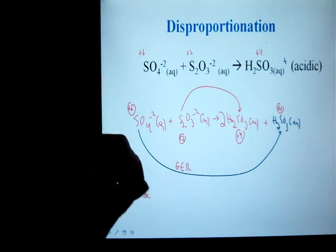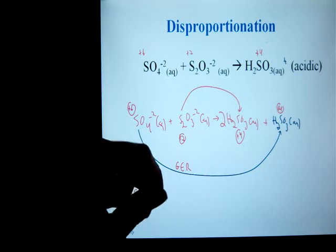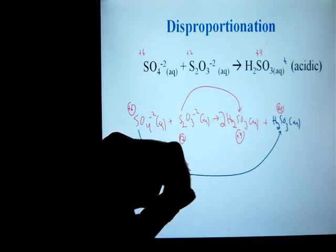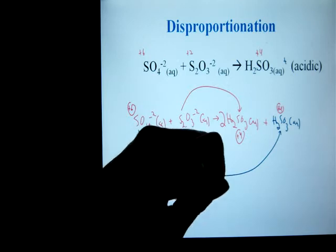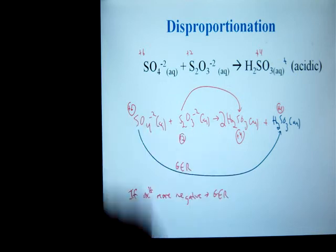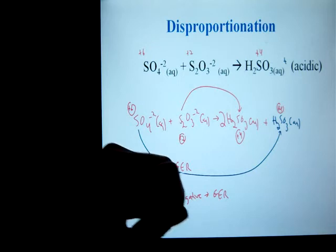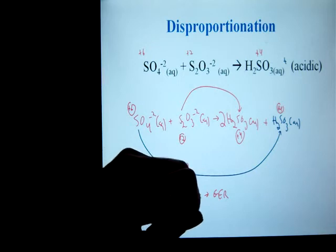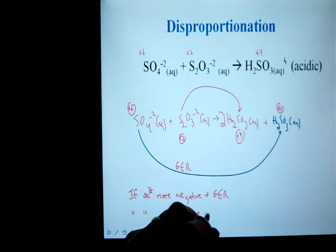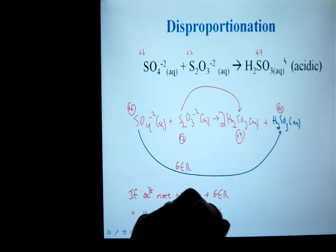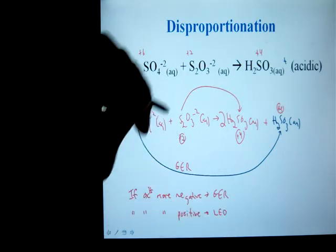Write that down again. If oxidation number is getting more negative, that means we are gaining electrons, reduction. Oxidation number is getting more positive, that means I am losing electrons. It means I'm being oxidized.